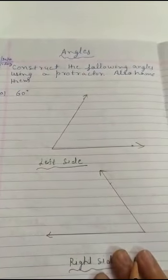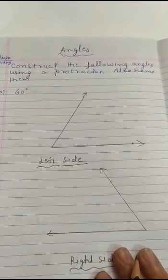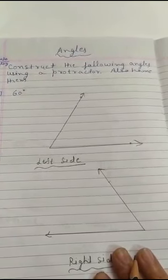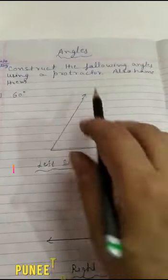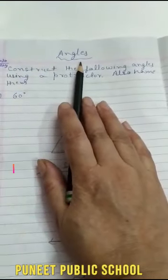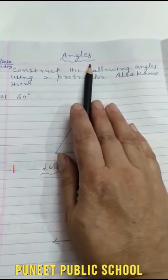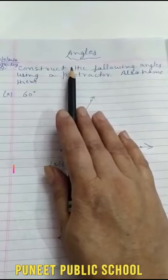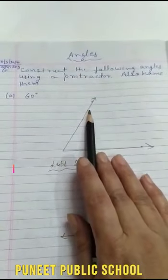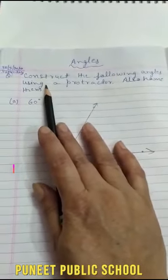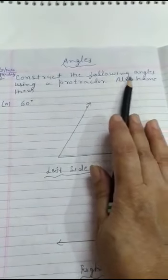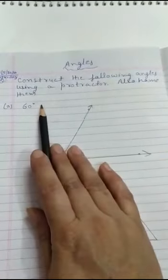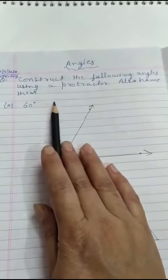Good morning students, welcome to my class. I hope you all are happy and fit at home. Now last class we explained what is the angle and type of angle. In this class, we'll construct the angles. Construct the following angle using the protractor and also name them - that means how to make the angle using the protractor and name them.